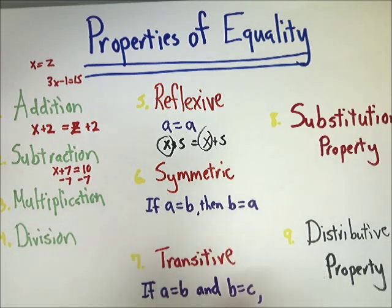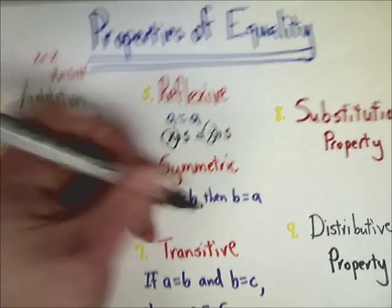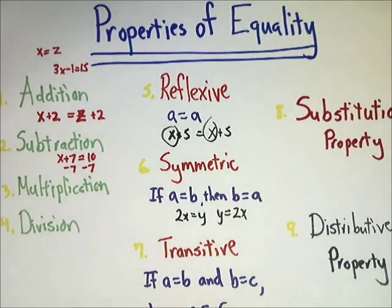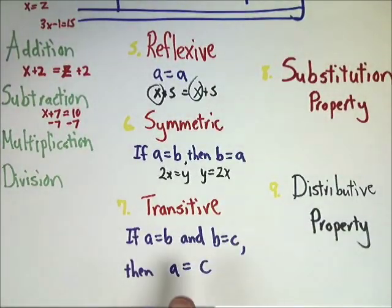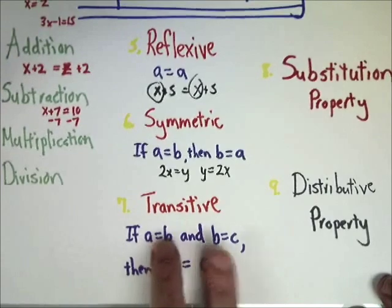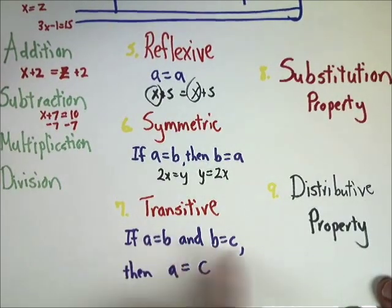Symmetric means that as long as you know something is equal to something else, you can flip their order. If 2X equals Y, you could also say Y equals 2X - convenient when solving for Y. Transitive states that if A equals B and B equals C, then A equals C. If A equals 8 and C equals 8, then A equals C equals 8. You just take out the middle comparative term.